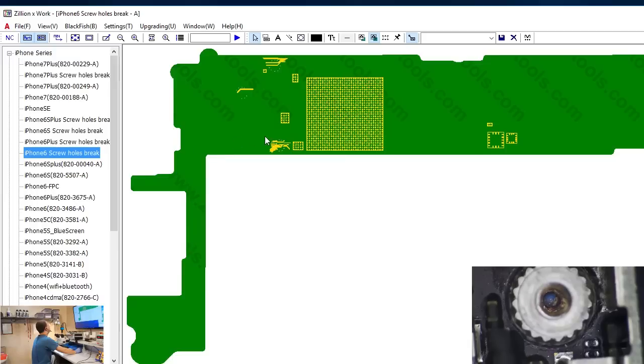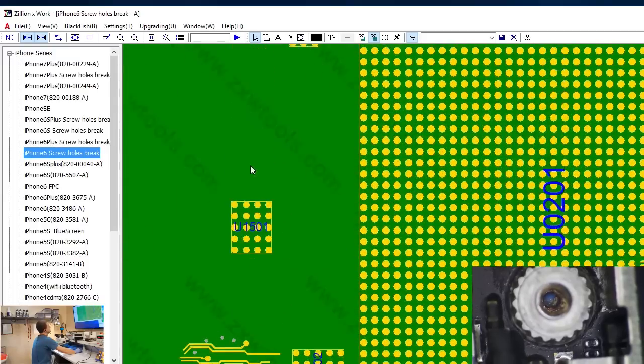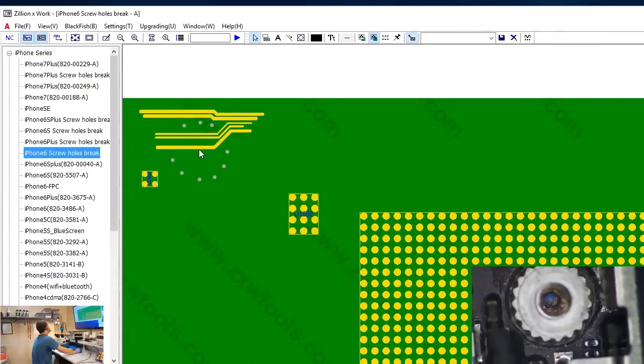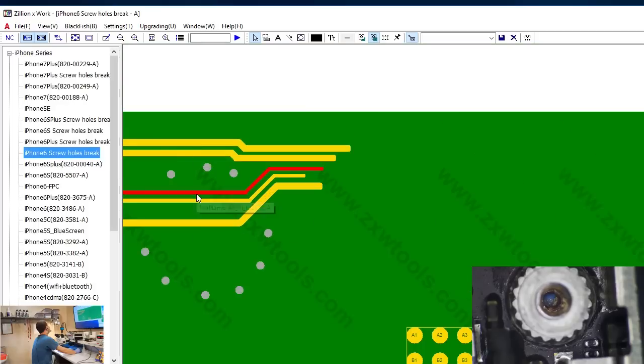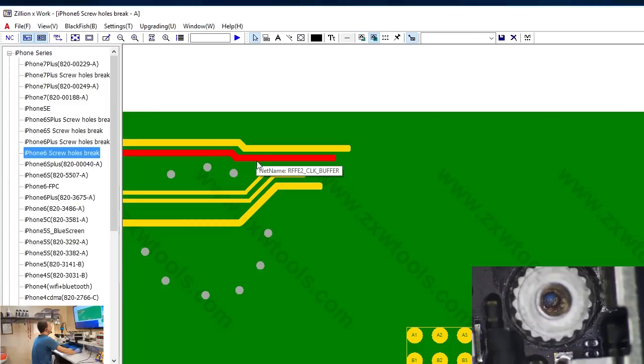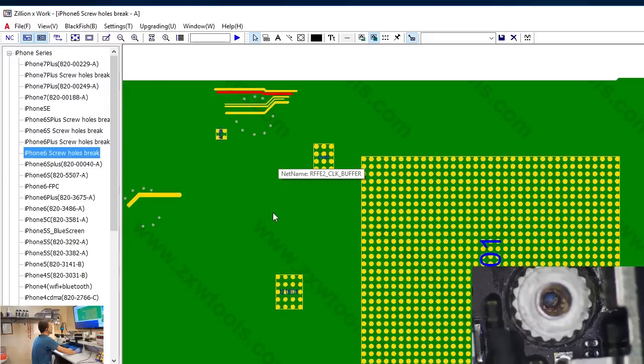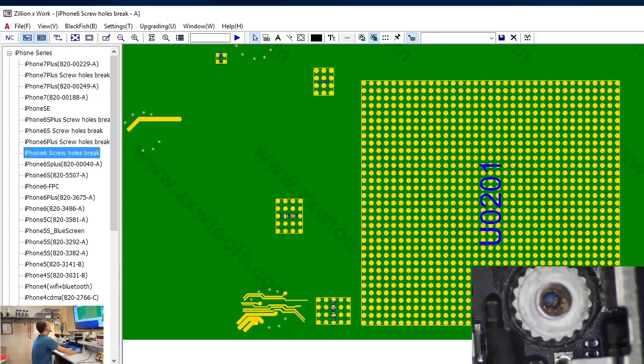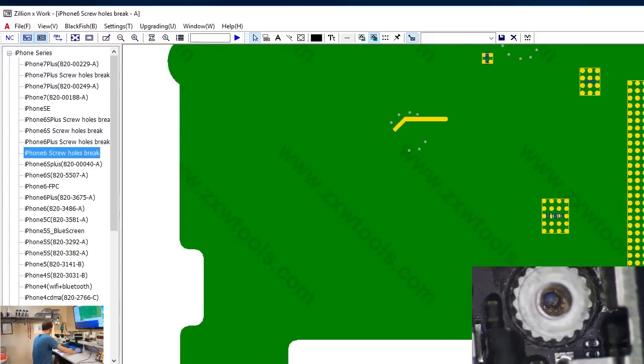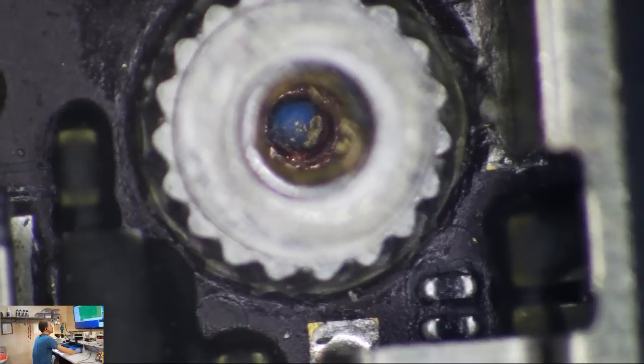When it thinks for that long it's just not loading so yeah under that screw hole we've got a three volt Mesa line. These are lines here, these are also for touch ID. Okay moving right along let's go back to the microscope.